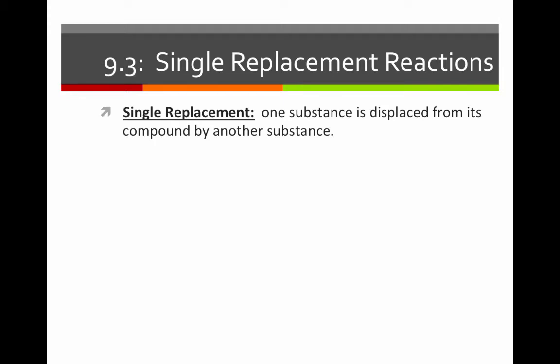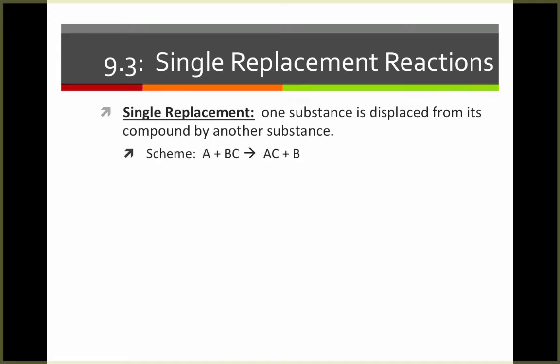Single replacement reactions are reactions in which one substance is displaced from a compound by another substance. The general scheme is A plus BC yields AC plus B. In other words, an element by itself comes in and displaces an element from the compound and bonds with the other element in the compound to yield AC plus B, which was displaced.